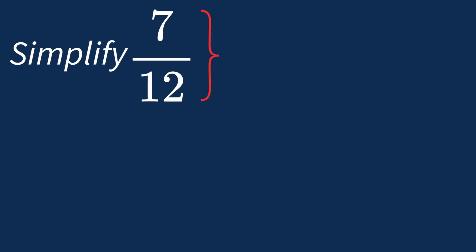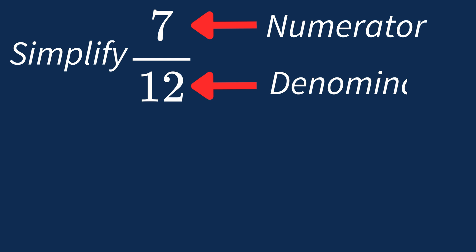When simplifying a fraction like 7 over 12, the first step is to check if there's a common factor between the top number, the numerator, and the bottom number, the denominator.